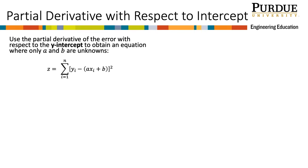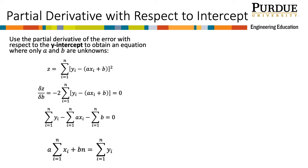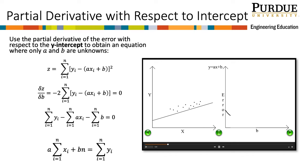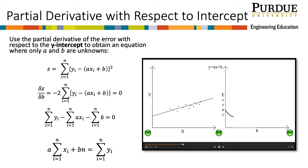Now we use the z equation and take the derivative with respect to the y-intercept b. Again, it uses the chain rule and treats b as the only variable. I will rearrange the equation algebraically, pulling out the slope a and y-intercept b and moving the constant term to the other side of the equal sign. Here I show a similar animation showing what the partial derivative with respect to the y-intercept does. The slope stays the same, but the y-intercept is changing, effectively moving the line up and down. As it moves, it gets closer to modeling the data well, then farther away. When the parabola is at its vertex, we get our minimum — which is where the line on the left graph appears to model the data the best.